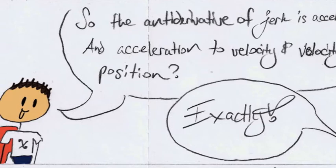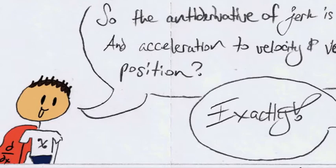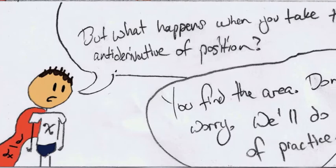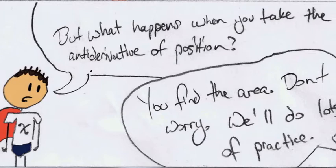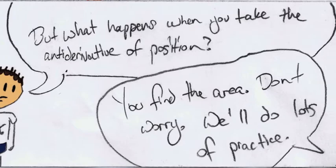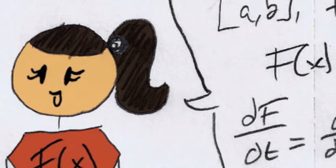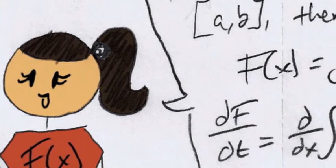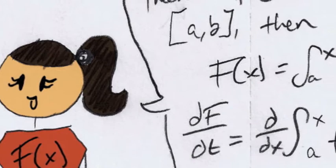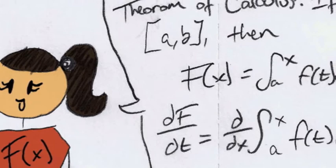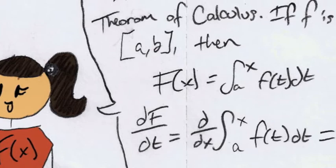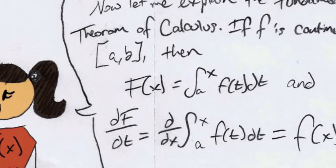But, what happens when you take the antiderivative of position? You find the area. Don't worry. We'll do lots of practice. Now, let me explain the fundamental theorem of calculus. If f, a function, is continuous on the closed interval from a to b, then capital F of x is equal to the integral f of t dt from a to x, and the derivative of capital F, df dt, is equal to the derivative of the integral f of t dt from a to x, and that's equal to f of x. Try solving this problem using the fundamental theorem of calculus, or FTC.